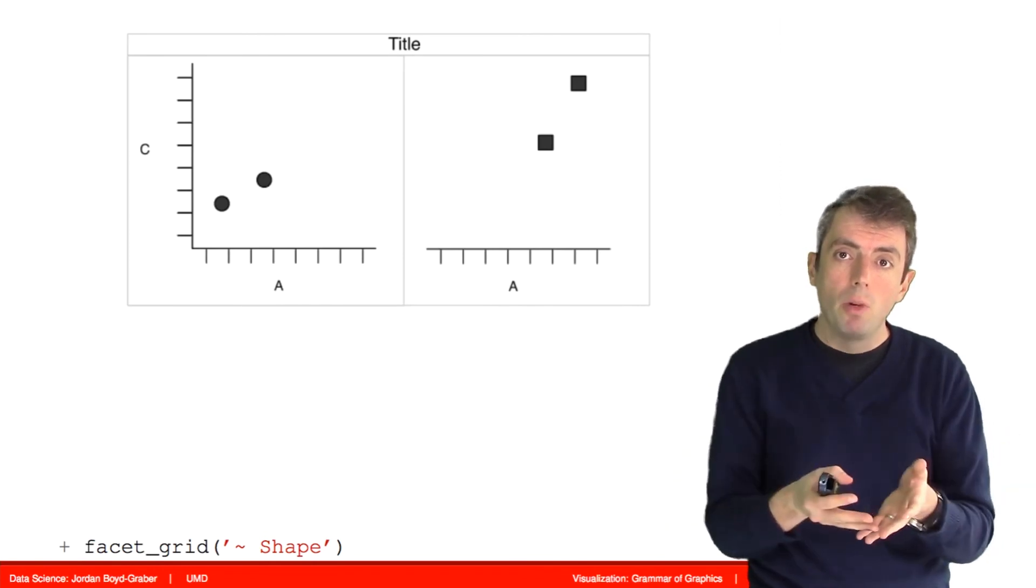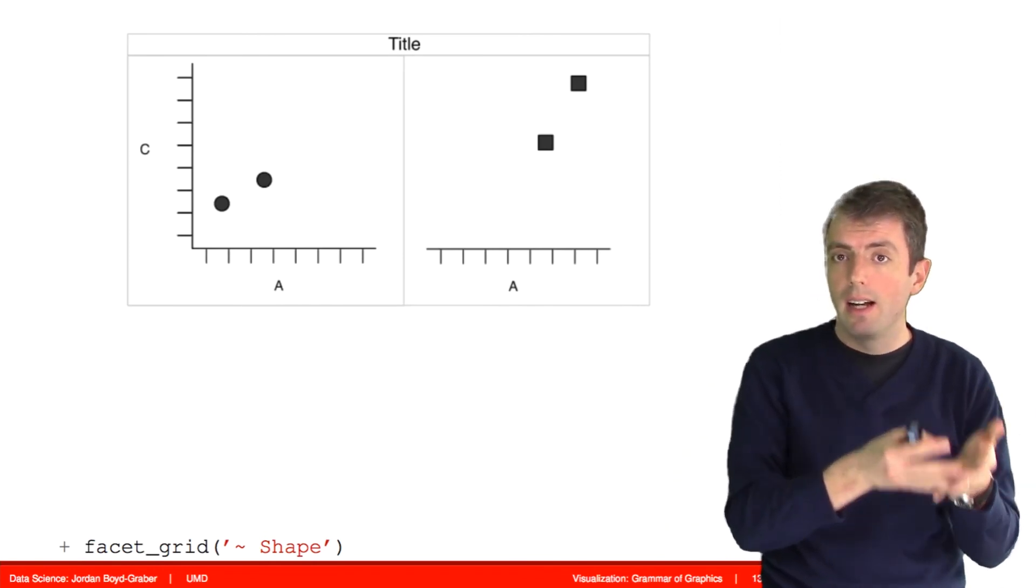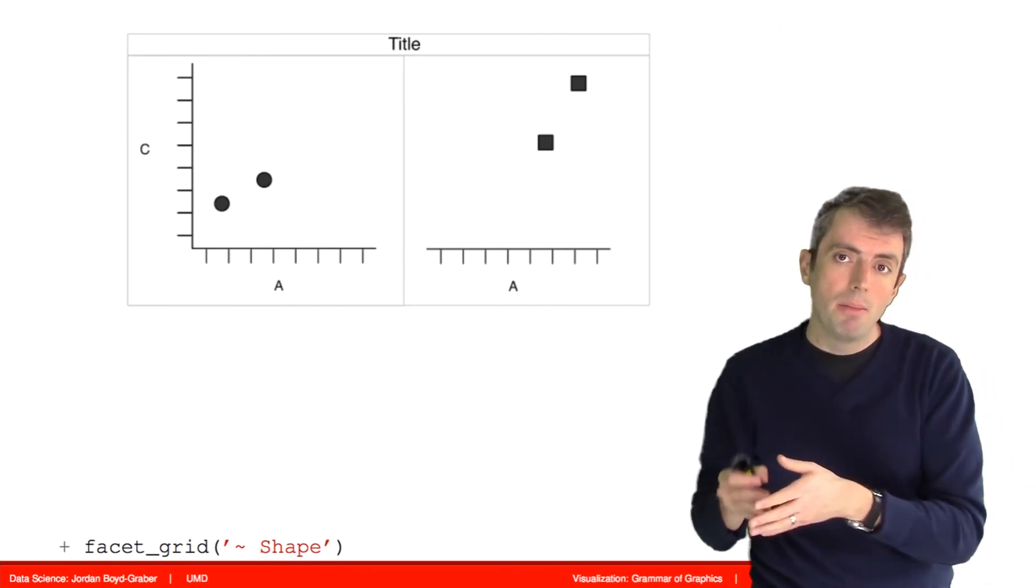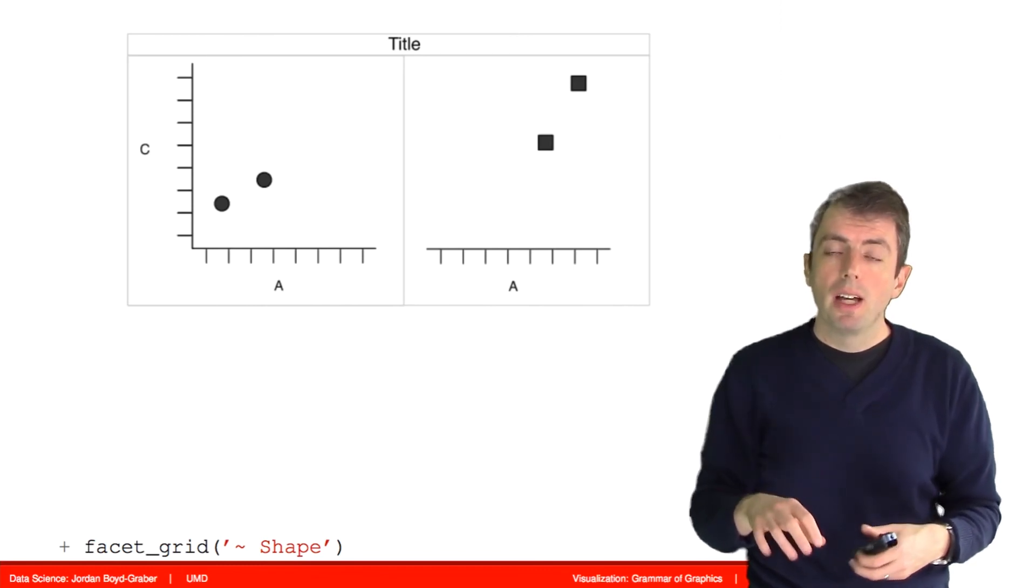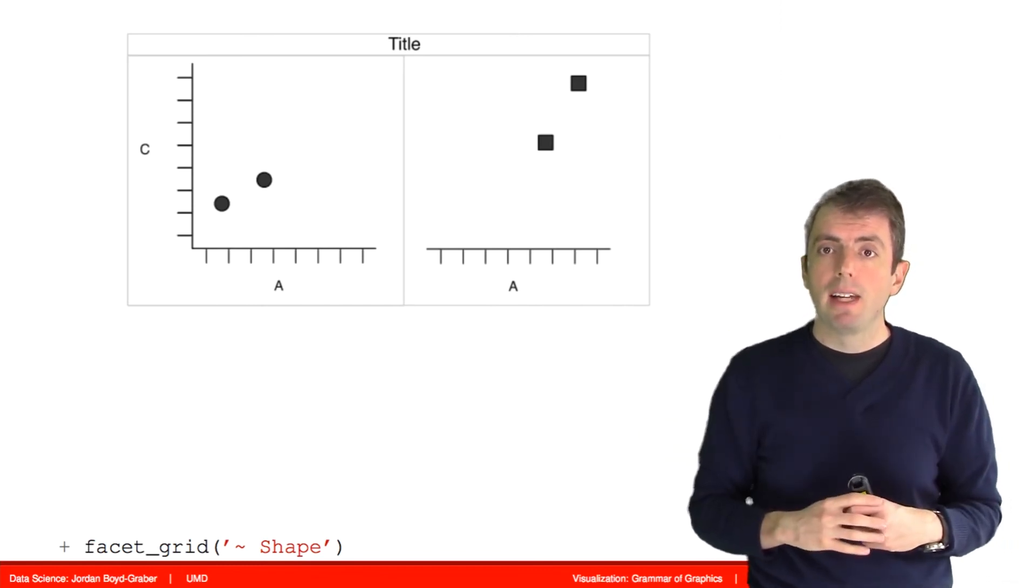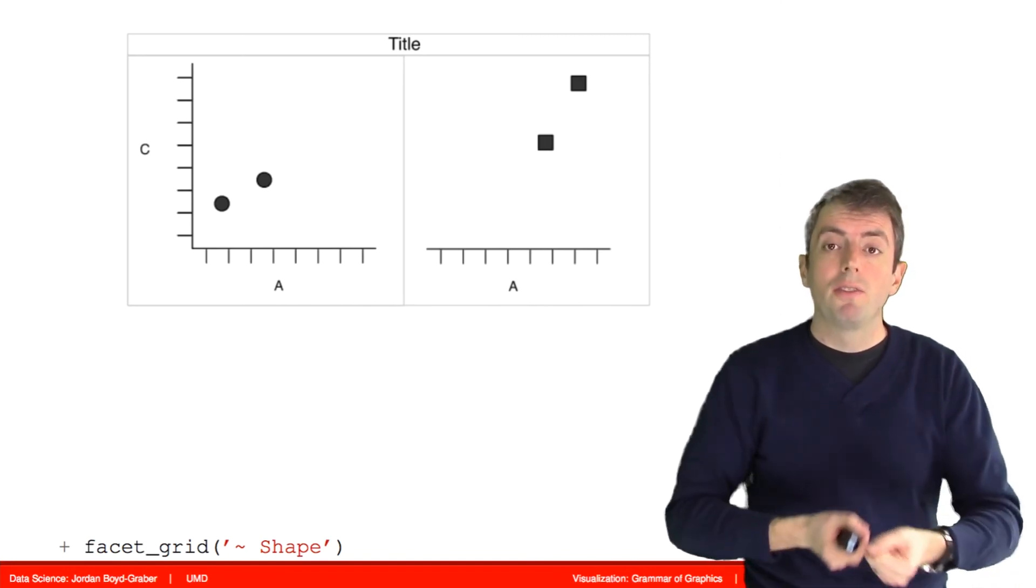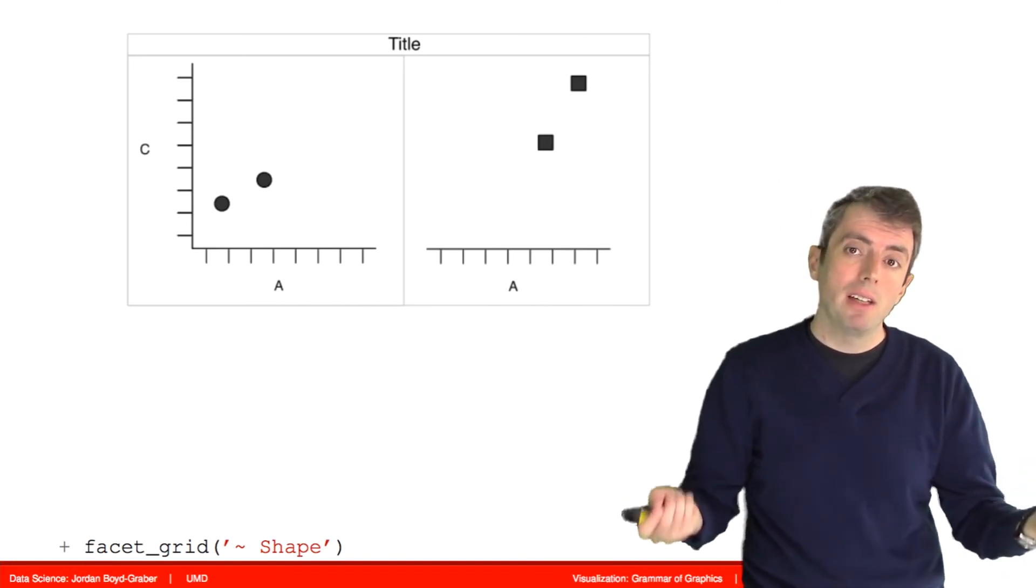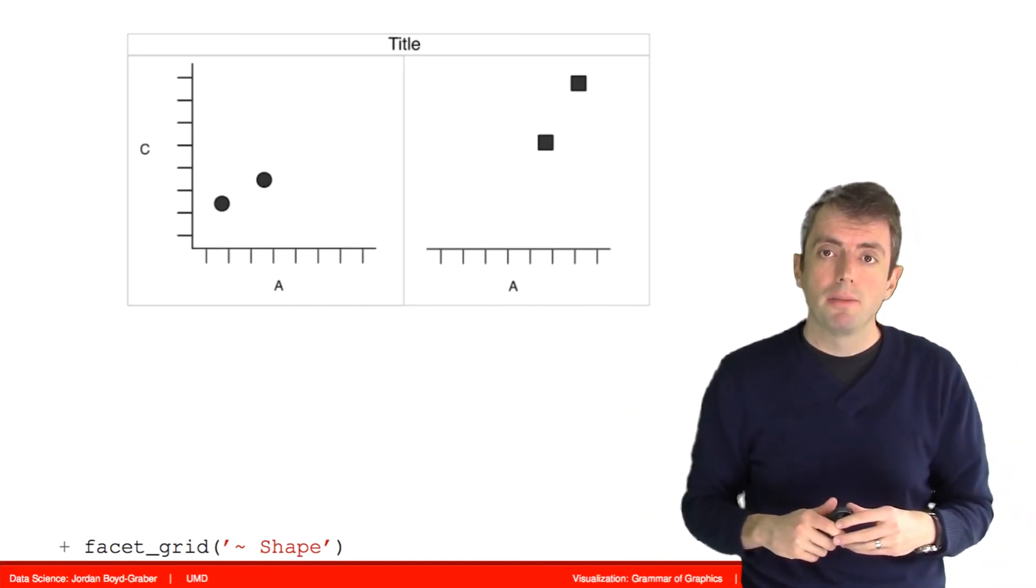Sometimes it makes sense to try to do that in one graph using things like color or shape to differentiate the two groups. Other times putting it side by side tells a clearer picture. Many times you have so many variables it's simply impossible to put it all into a single graph.